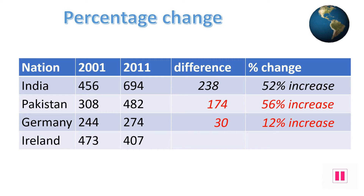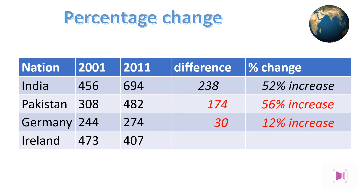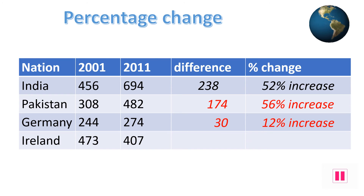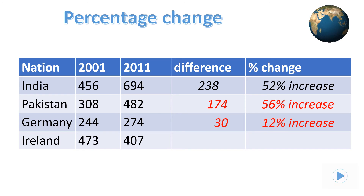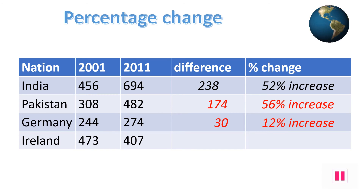The difference for Pakistan between 2001 and 2011 is 174, giving us a 56% increase. The difference for Germany between these dates is just 30, giving it a 12% increase.